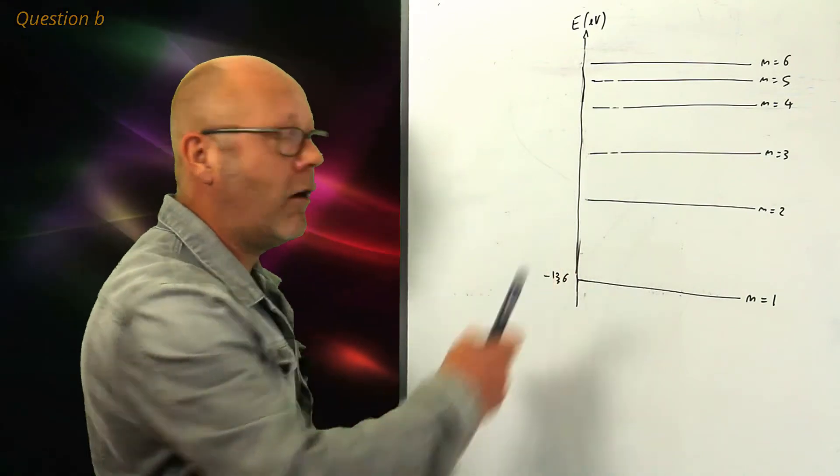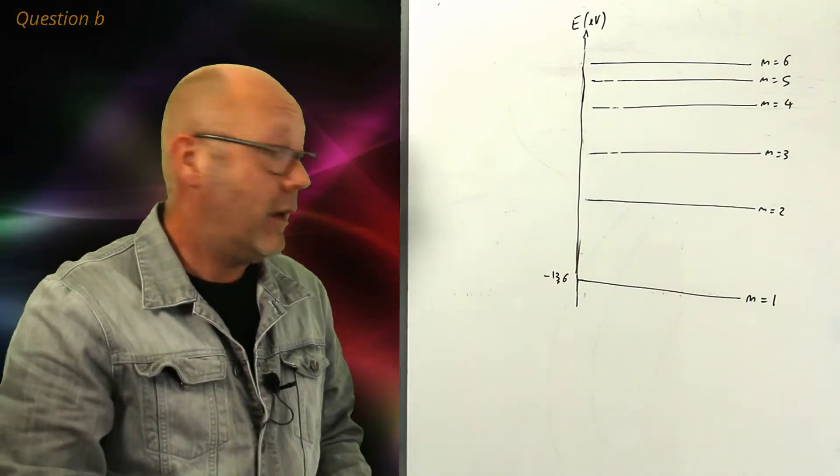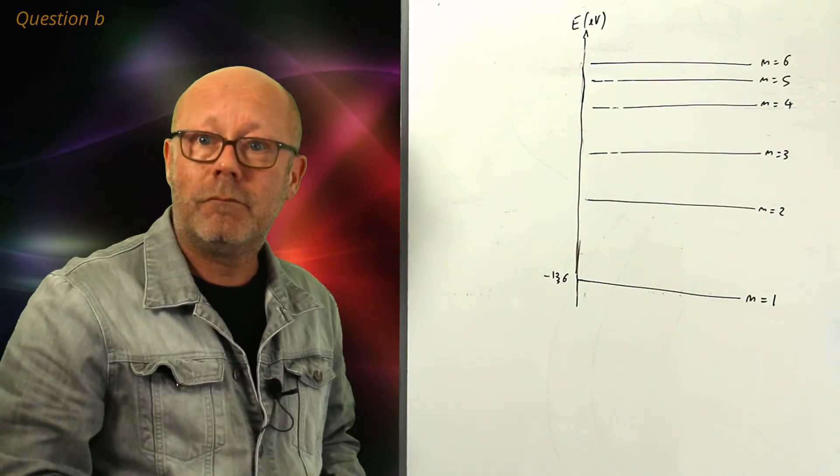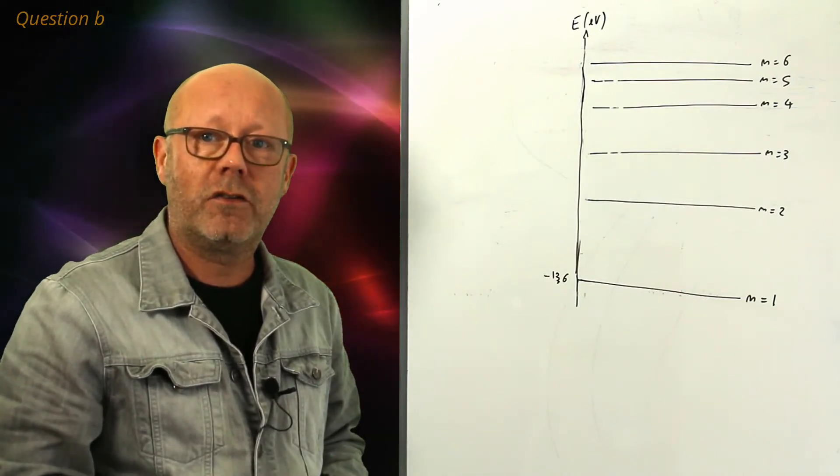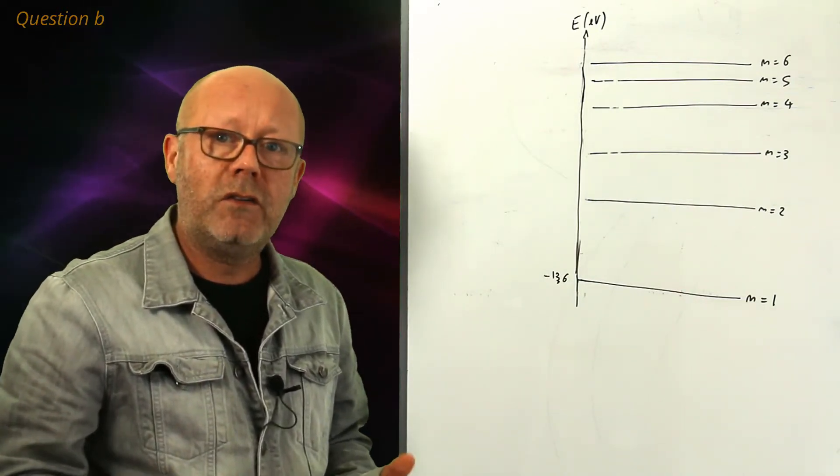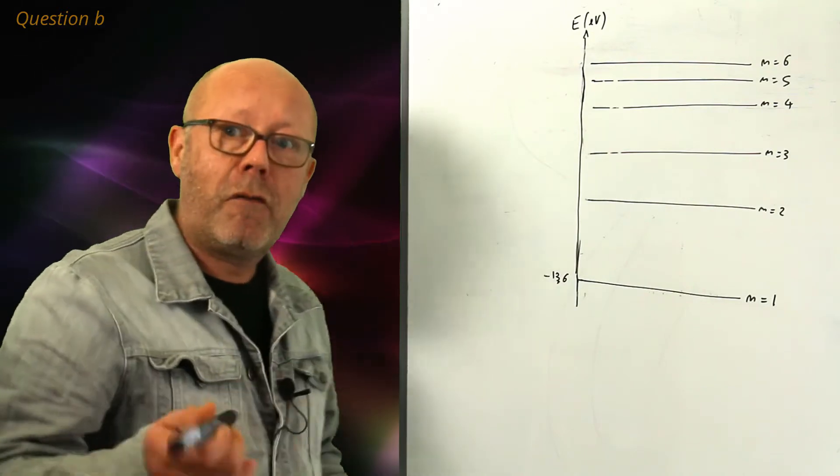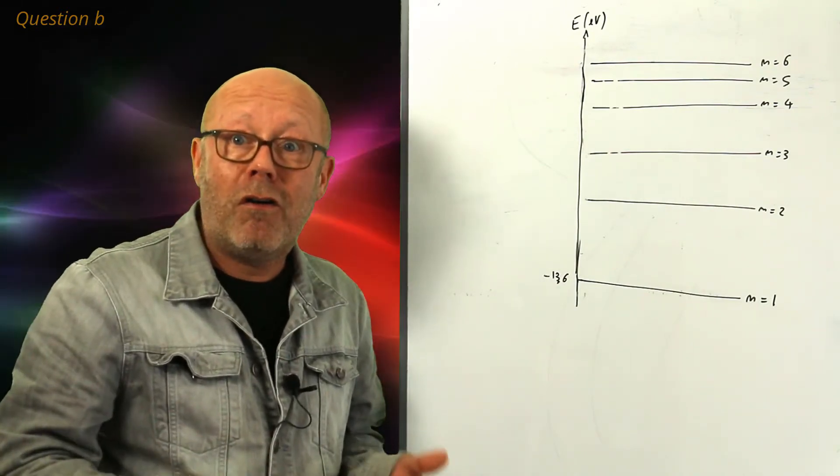The second question requires from you to calculate the energy of the levels. So, it gives you actually the first one, minus 13.6 electron volts. To do that, we use the equation that results from the atomic model from Bohr of the hydrogen atom.